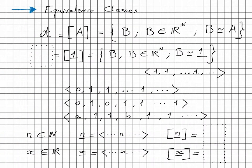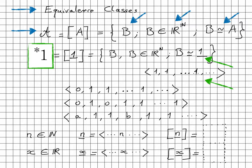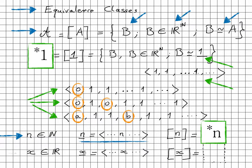We can now define the equivalence class. I write curly-A for the equivalence class of sequence A — it is the set of all B in R^N equivalent to A. In particular, the equivalence class of 1-bar consists of all sequences equivalent to the constant sequence 1. Because we cannot write a curly-1 and by agreed convention, we write this as star-1. For any integer n, we build the constant sequence and write its equivalence class as star-n, and we do the same for real numbers.